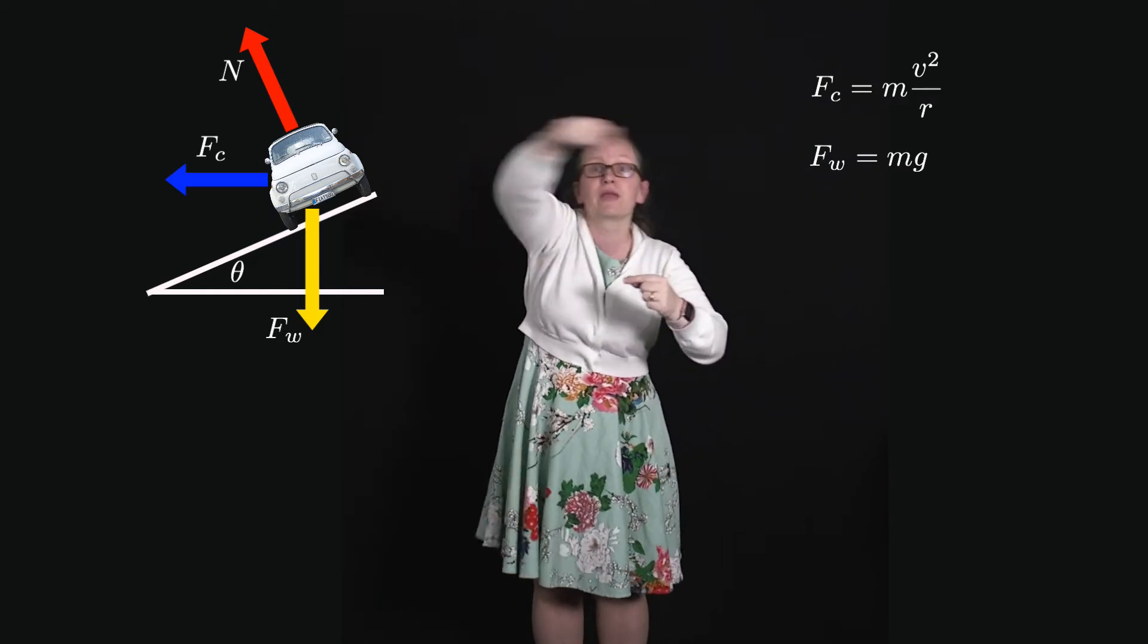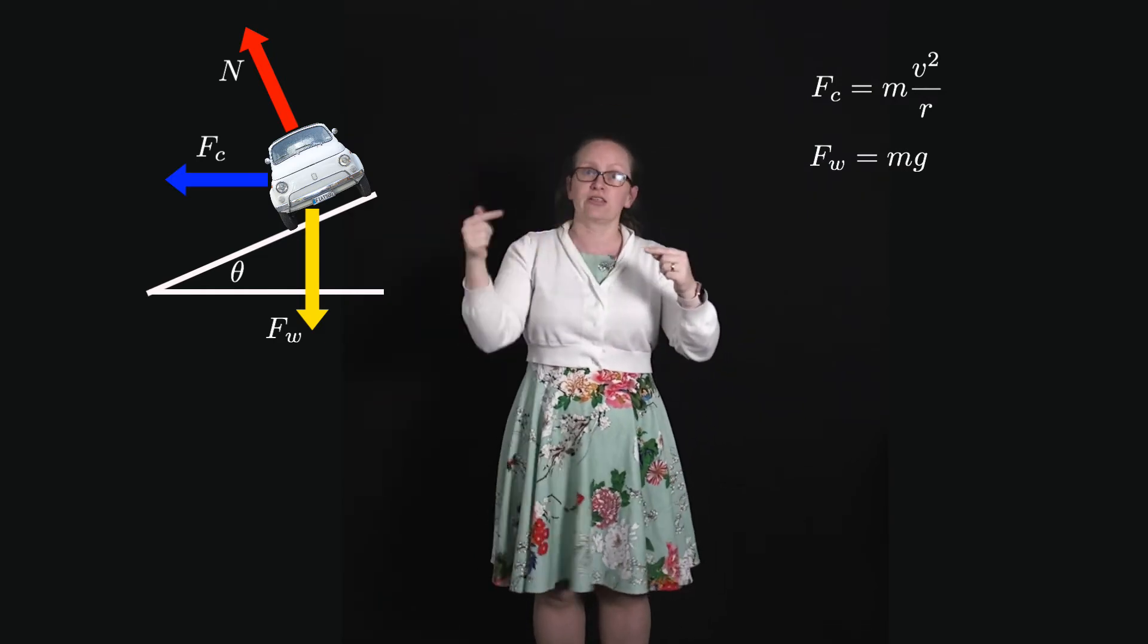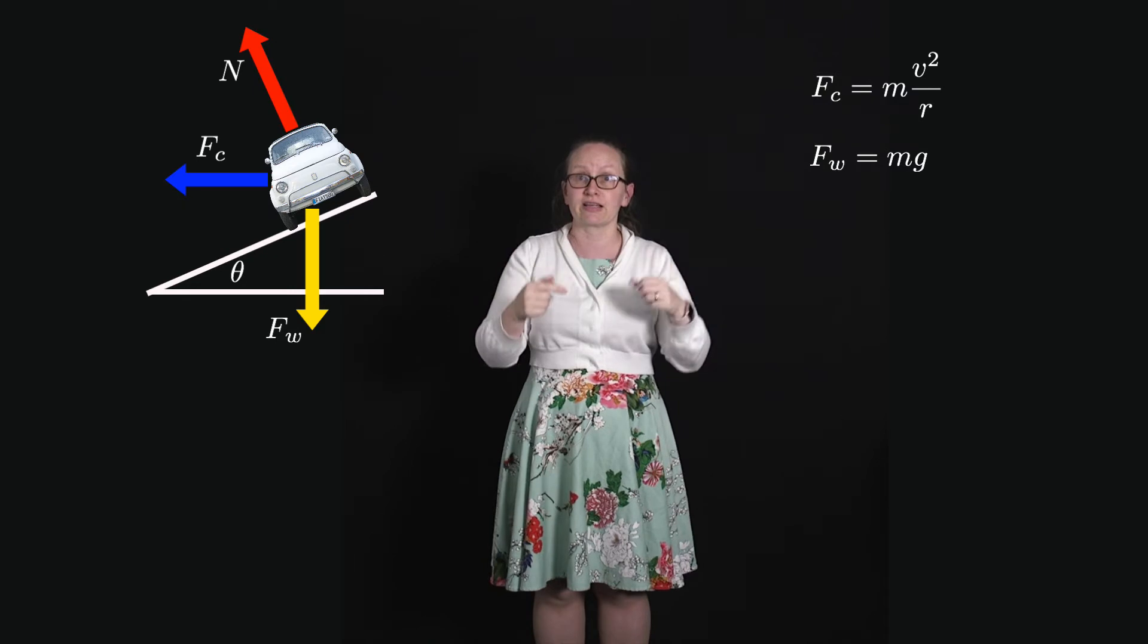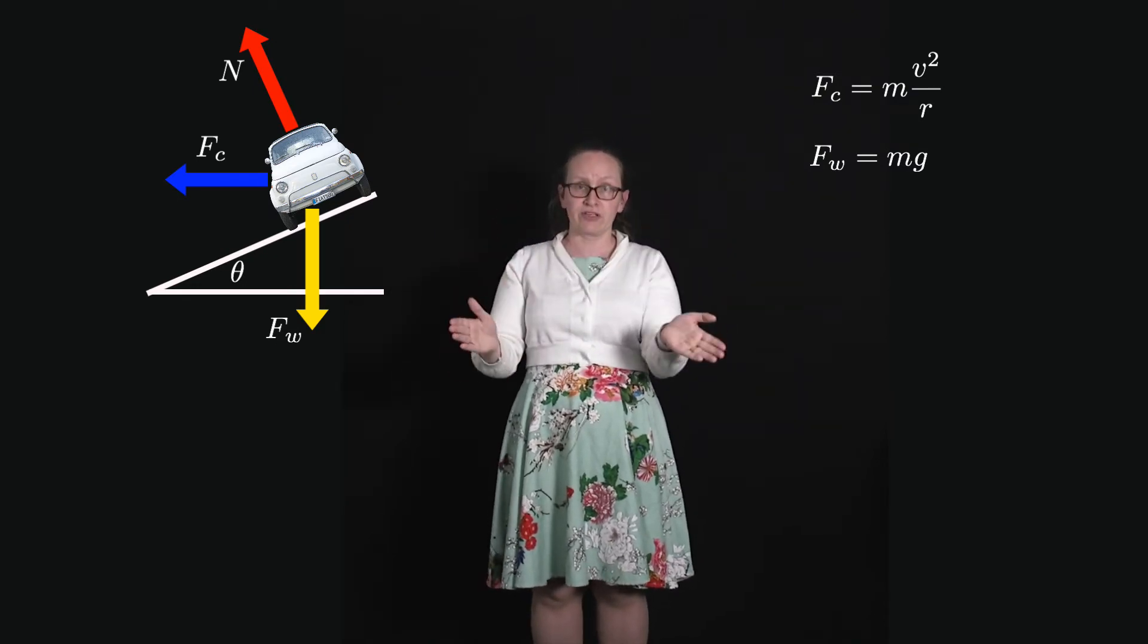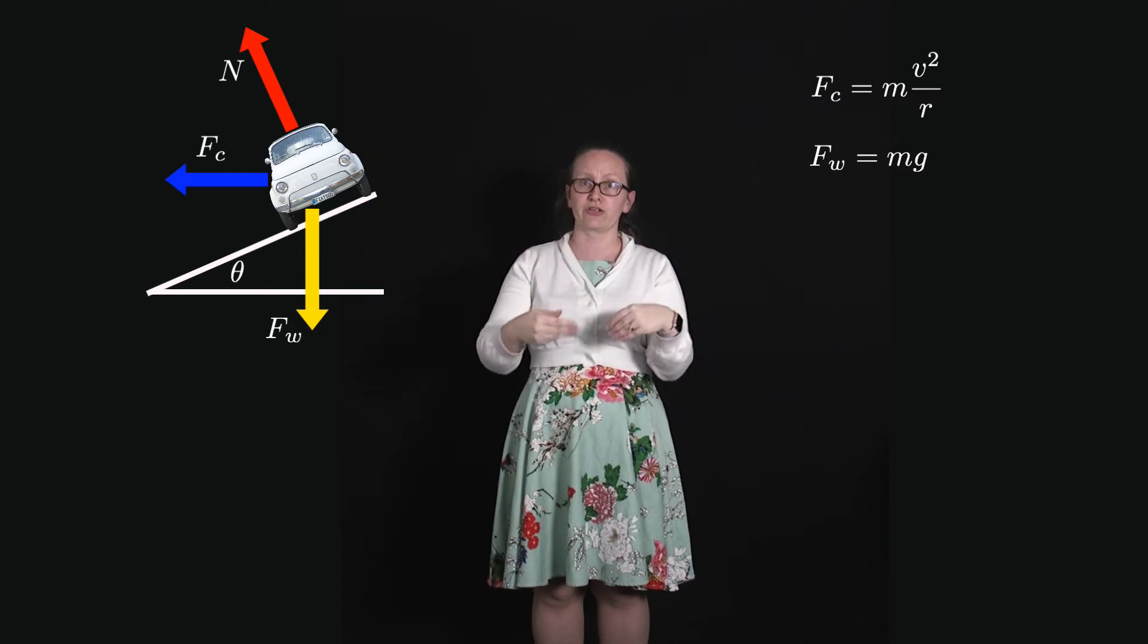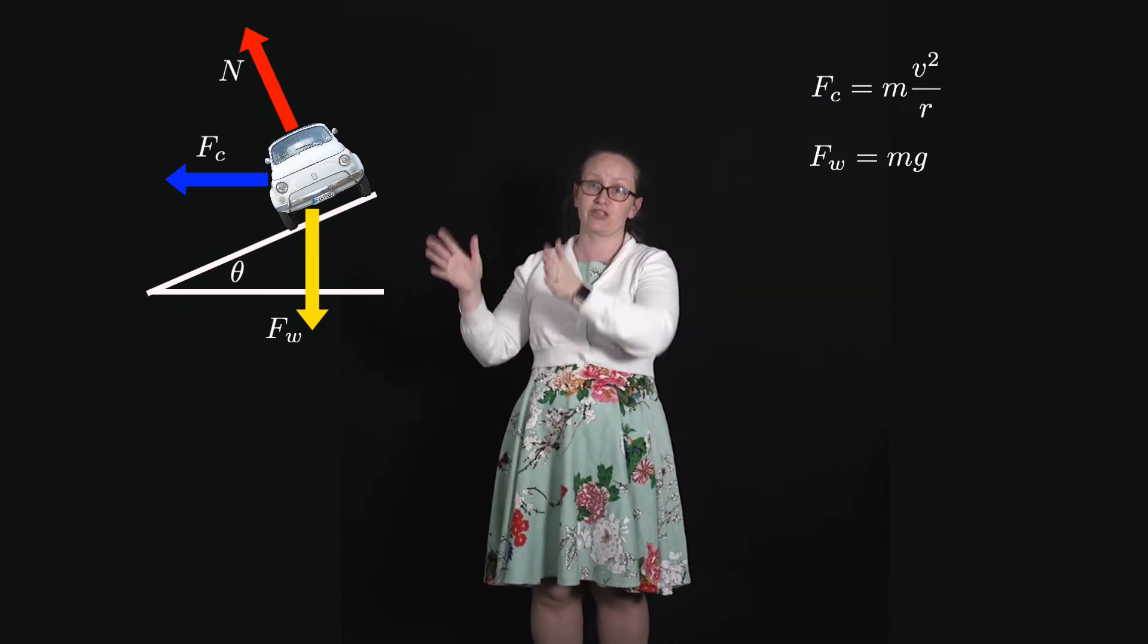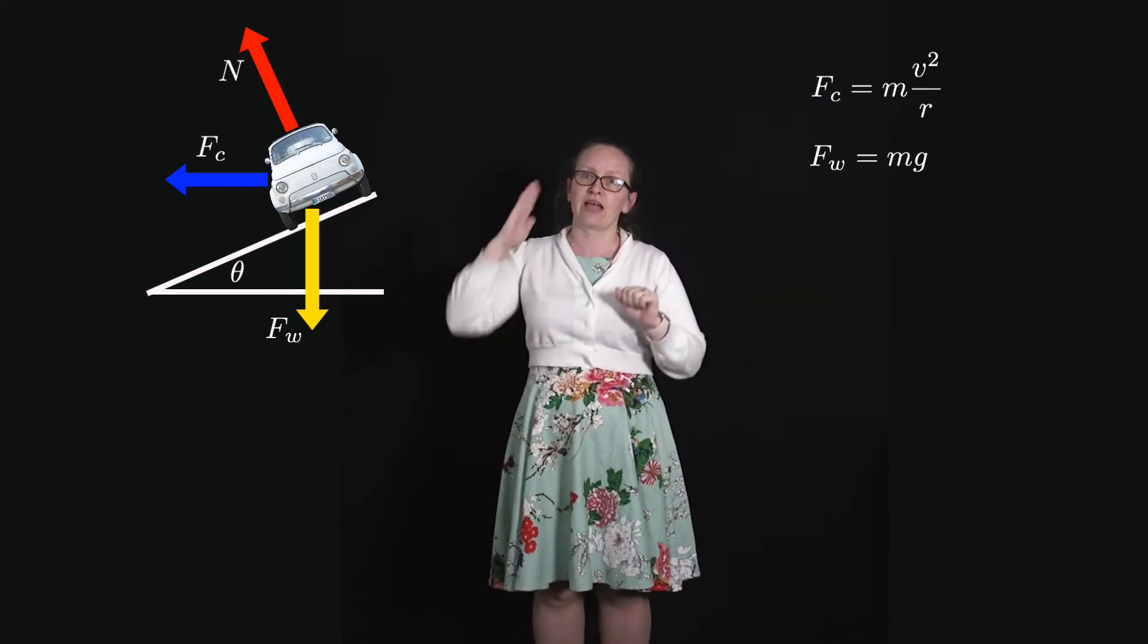With our weight force, this is already a vertical force, so it's got zero horizontal component and the vertical force is just mg going downwards. Now our normal force, we can split this into a horizontal component towards the center of the circle which is given by the normal force times sin θ, and a vertical component which is given by the normal force cos θ.